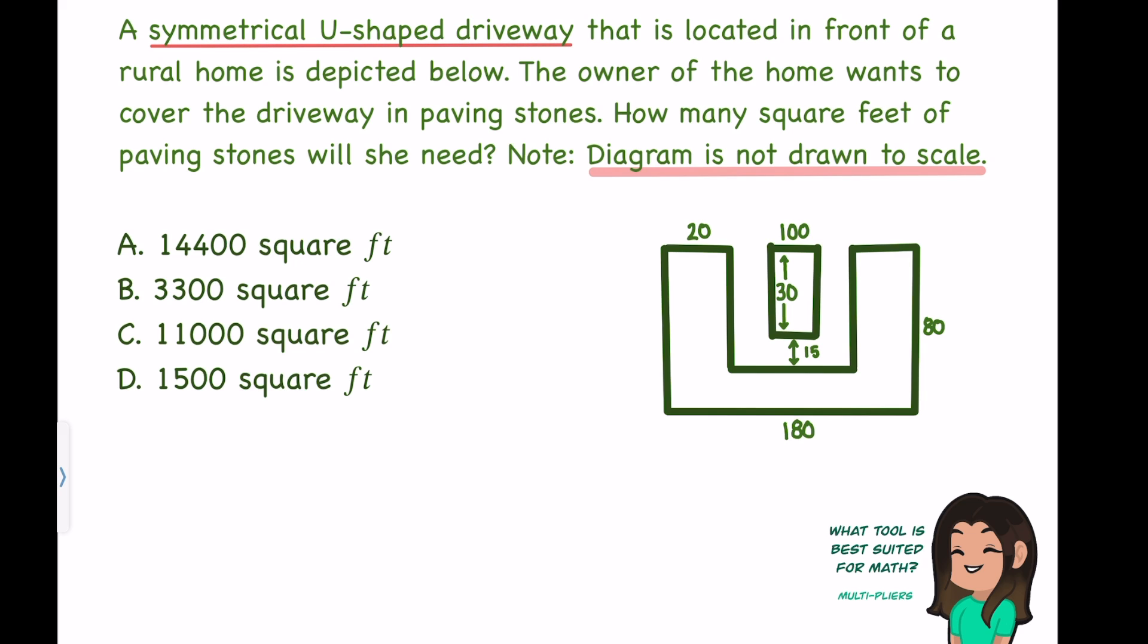By symmetrical, it means that whatever's on one side of this driveway must be equal to whatever's on the other side. The fact that it's U-shaped tells us what we're looking for. When it comes to this question, it's a little unfair because they don't define the driveway for you. The driveway is actually this section here on the inner side of both these rectangular-like objects.